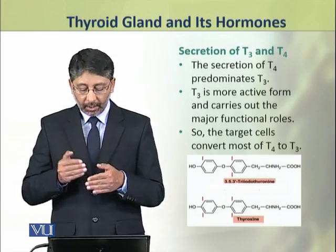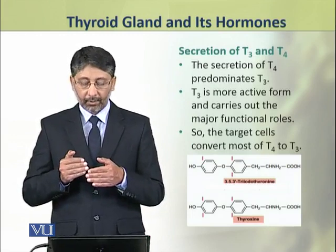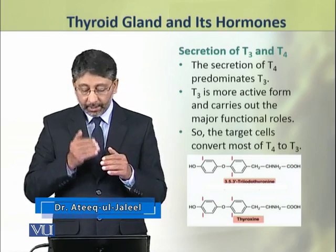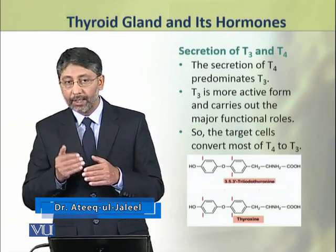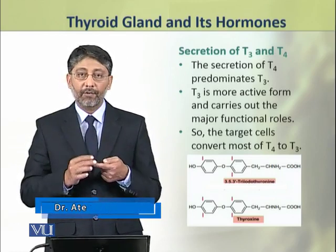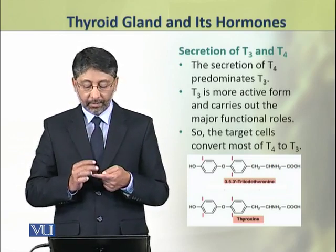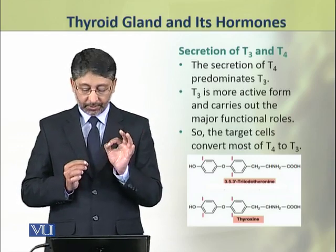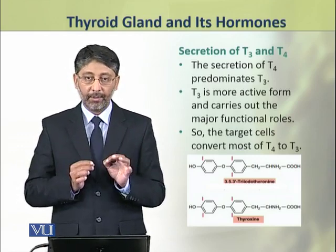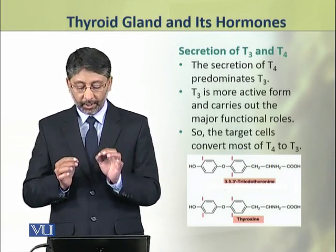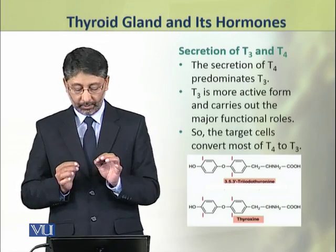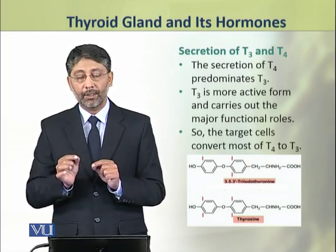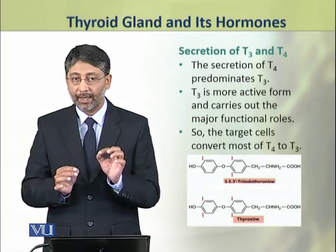Regarding the secretion of T3 and T4, the secretion of T4 dominates T3. However, T3 is the more active form and carries the major metabolic functions. So the target cells mostly convert T4 into T3, which is the active form.